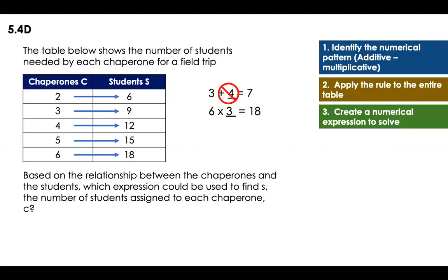Now I just have to create a numerical expression to solve because that's what they are asking. The numerical expression will be that for each chaperone times three, I will have s, the total amount of students. That's it, guys. Very easy.